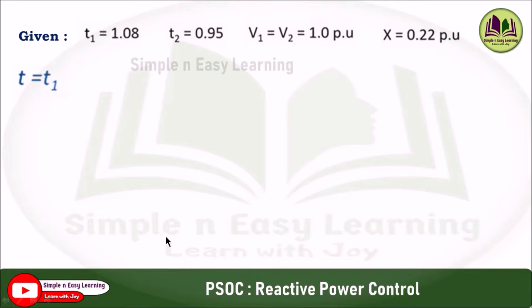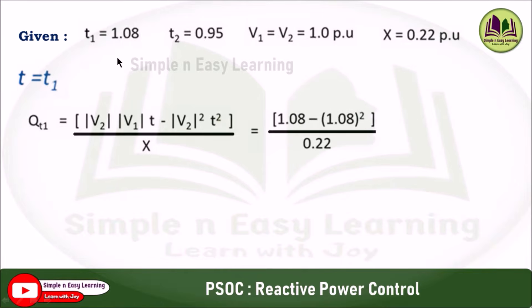First consider T equals T1. Apply the reactive power formula: magnitude of V2 times magnitude of V1 times T minus V2 squared times T squared, divided by X. V1 and V2 are 1, T equals T1 equals 1.08, so 1.08 minus 1.08 squared divided by the reactance 0.22.